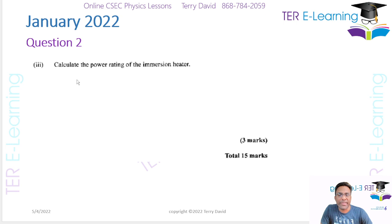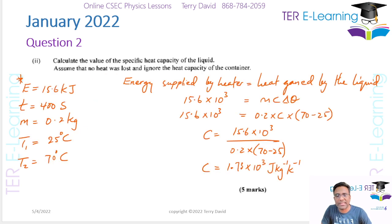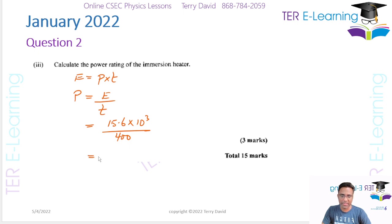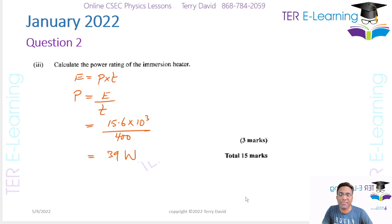The next part asks us to calculate the power rating of the heater. Energy is given by power multiplied by time, so power equals energy divided by time: 15.6 × 10³ joules divided by 400 seconds, which gives 39 watts. So the power rating of the heater is 39 watts. That's the full question for 15 marks.